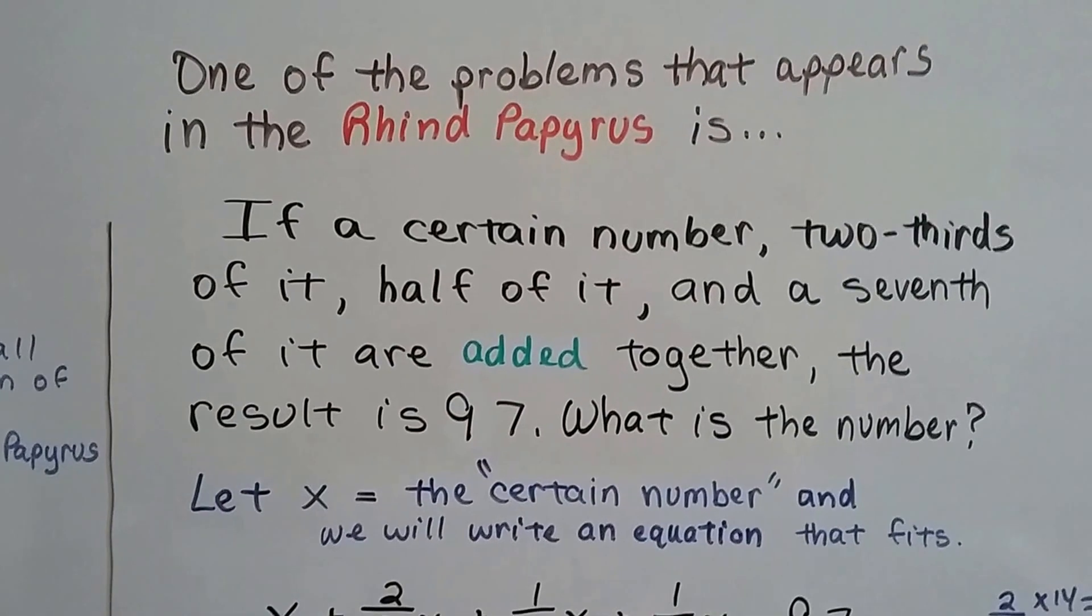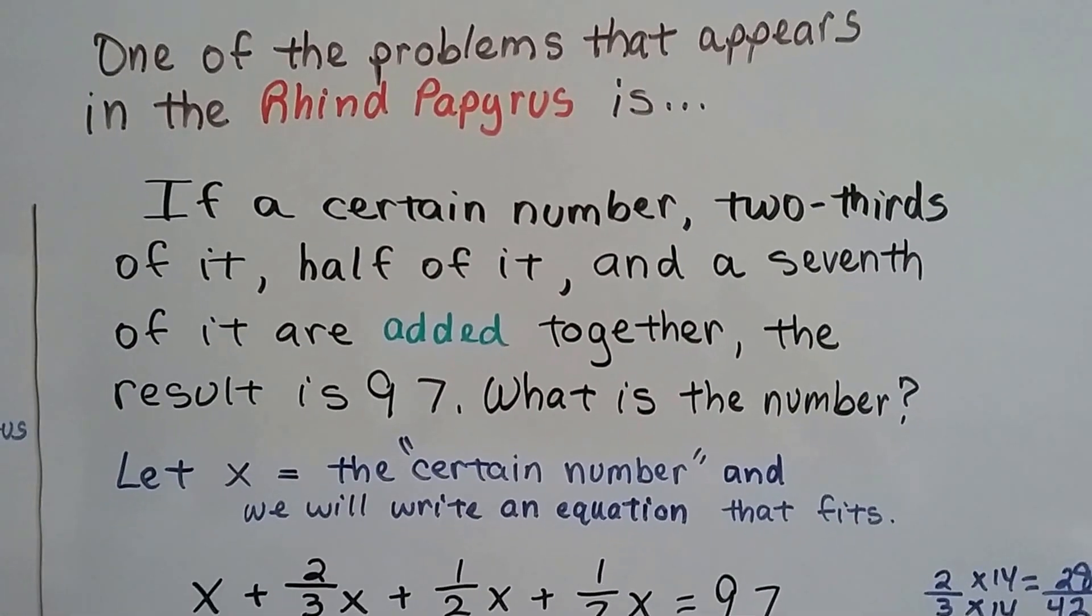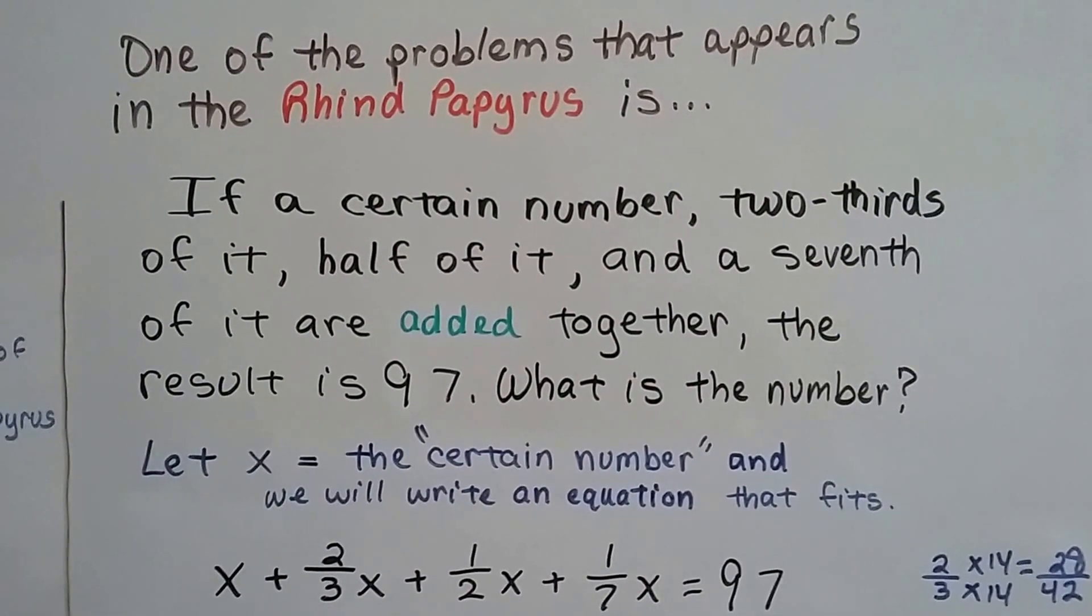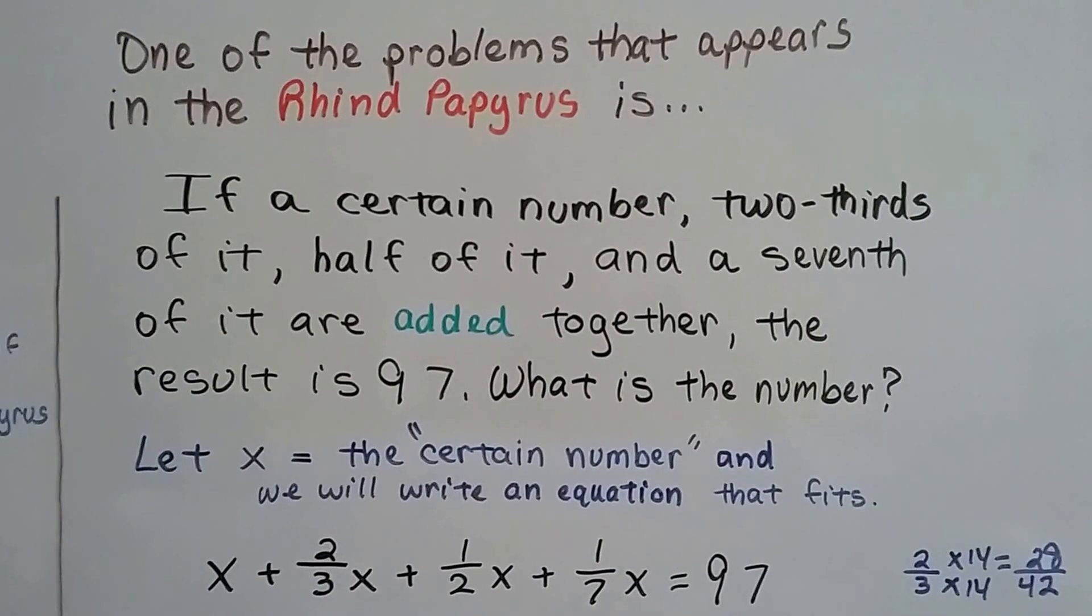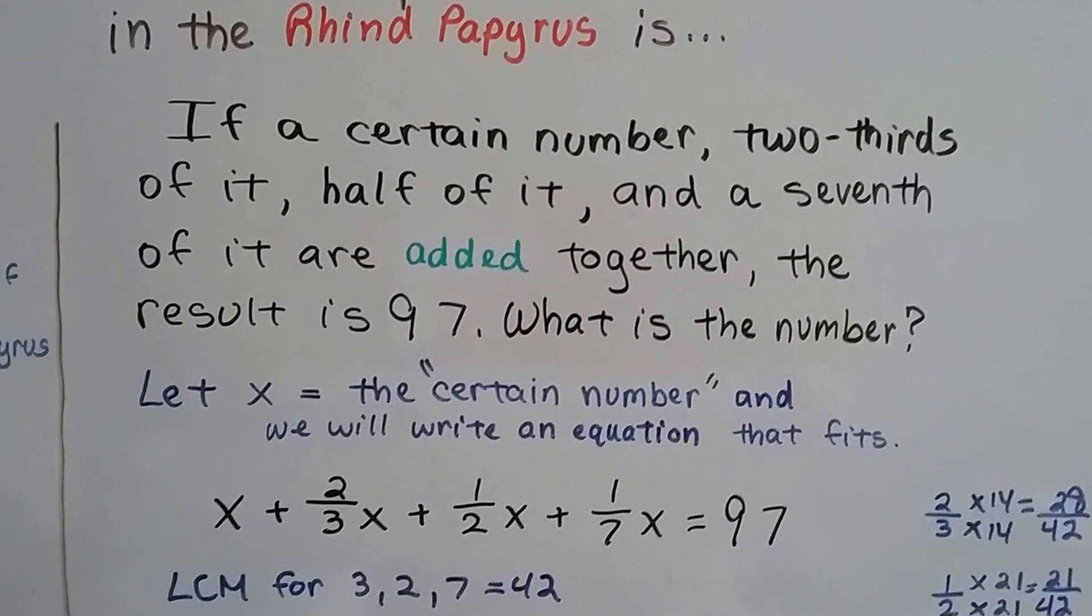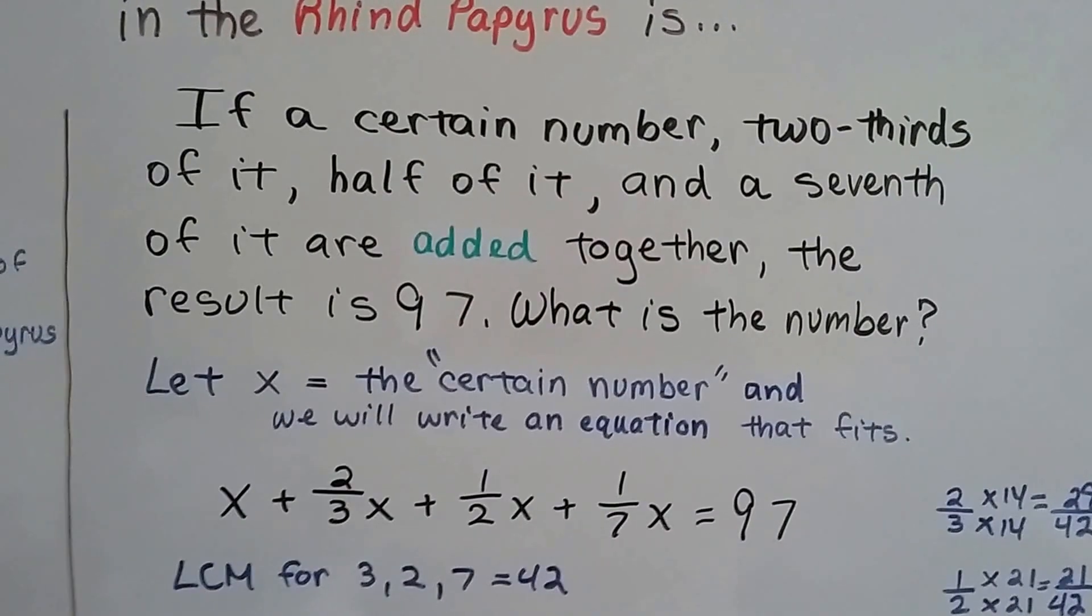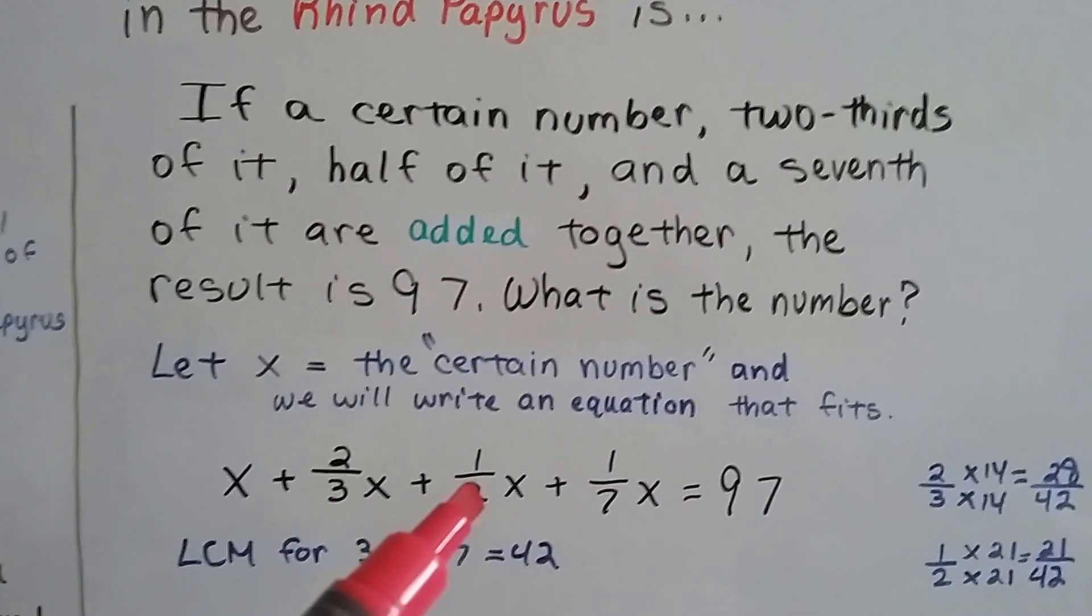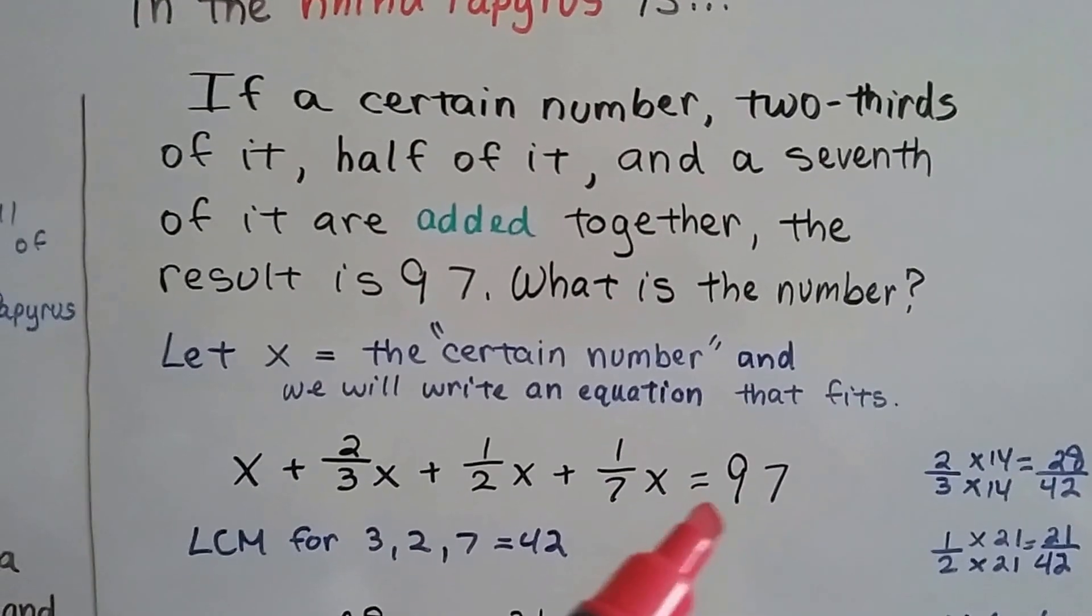Well, one of the problems that appears in the Rhind Papyrus is if a certain number, two-thirds of it, half of it, and a seventh of it are added together, the result is 97. What is the number? So we can see that right away that we need to add them. And if we let x equal that certain number, we can write an equation that fits. So we've got a certain number x plus two-thirds of x plus a half of x plus one-seventh of x, and the result is 97, so it equals 97.